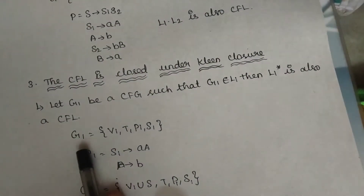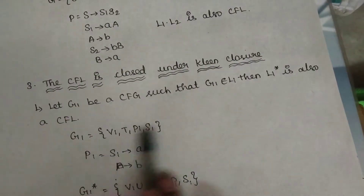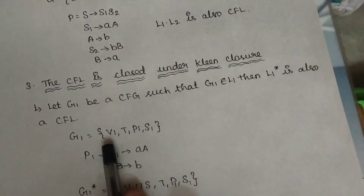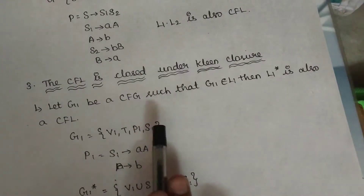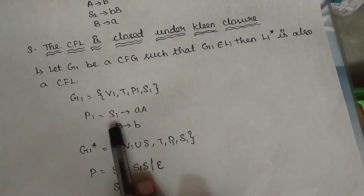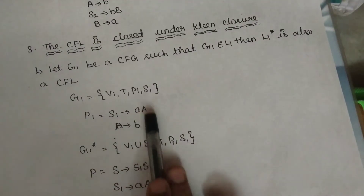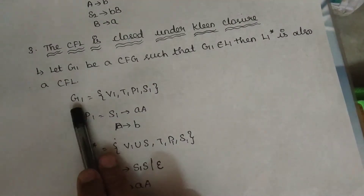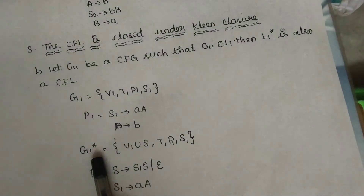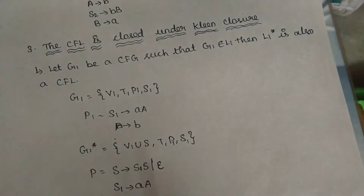If you use any language, if you use any grammar in the language — variable, terminal, production, start symbol — if you use two productions, you can use S1 to A and A to B. If you apply the closure operation to the grammar using any language, you can get a context-free language.